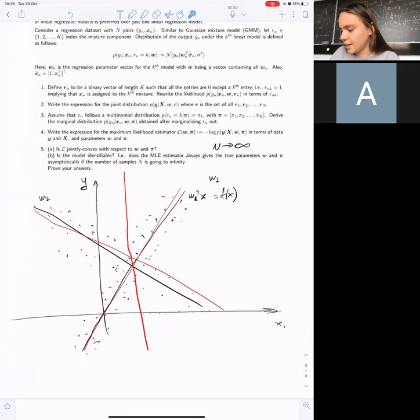Finally, you need to find the maximum likelihood estimator from which you can find the parameters w and p. Then you also need to prove some properties of this function, like whether it's jointly convex or not. Then you need to see if this model is identifiable, so does it give—if your data goes to infinity—does it give all the same parameters w and p.